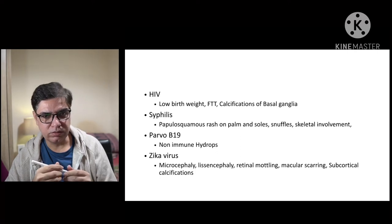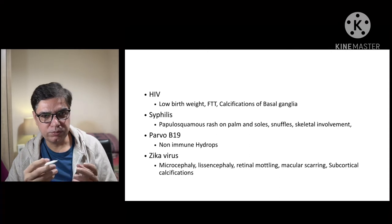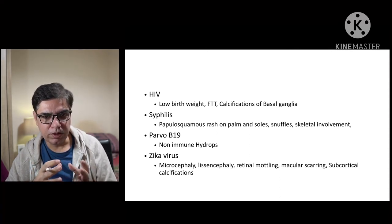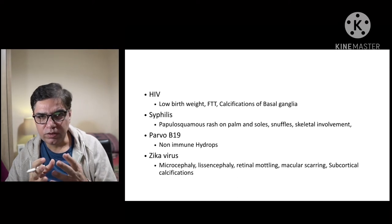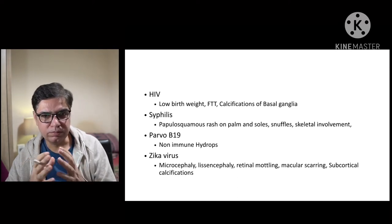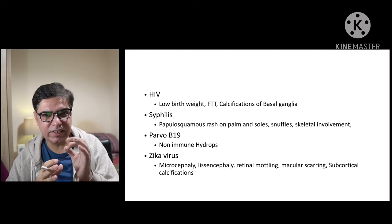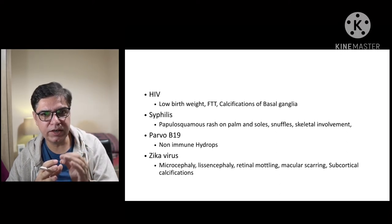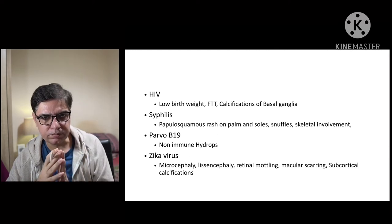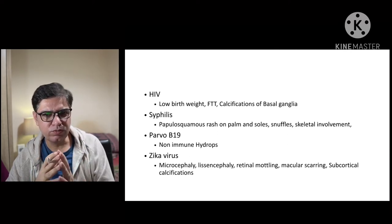HIV is more common in tropical and subtropical regions. About 25% of transmission can occur perinatally. These babies are typically born with low birth weight, and later develop failure to thrive. CT or MRI shows calcification of the basal ganglia, which is very typical of congenital HIV infection.